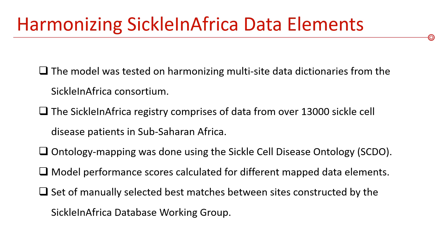The model was tested on harmonizing multi-site data dictionaries from the SickleInAfrica consortium. The SickleInAfrica registry comprises data from over 13,000 sickle cell disease patients in Sub-Saharan Africa. Ontology mapping was done using the sickle cell disease ontology, and other ontologies were used in further testing, including the human phenotype ontology, the disease ontology, and the Monarch merged disease ontology, among others.